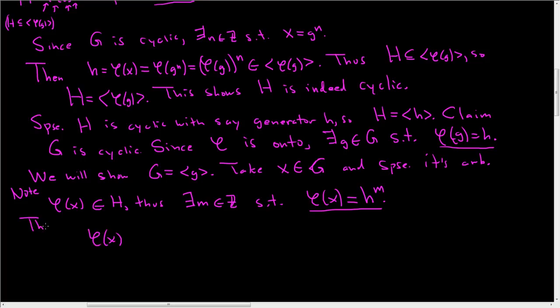So let's see. So phi of x. So then phi of x, that's h to the M, which is phi of g to the M, which is phi of g to the M. Beautiful. Since phi is one to one, now we can use the fact that it's one to one. We have x equal to g to the M. And that's certainly in the cyclic group generated by little g.